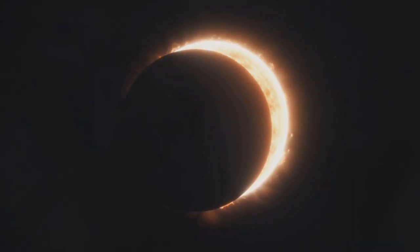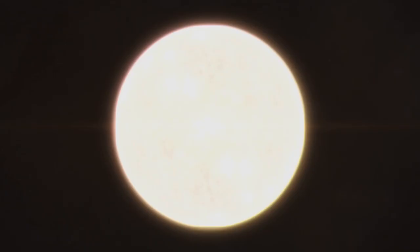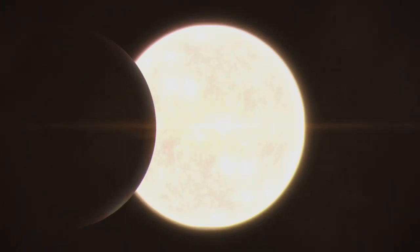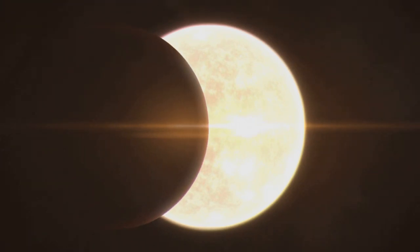Now you might be wondering how significant this cooling effect is. Studies have shown that during a total solar eclipse, temperatures can drop by as much as 3 to 5 degrees Fahrenheit. That's similar to the temperature change you'd experience from day to night in a typical spring or autumn day.